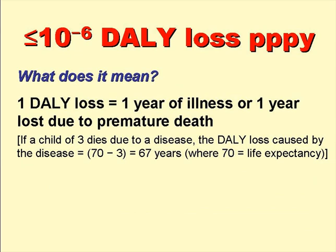What does a 10 to the minus 6 DALY loss per person per year actually mean? A 1 DALY loss equals 1 year of major illness, or 1 year loss due to premature death. For example, if a child of 3 dies from some disease, then the DALY loss caused by that disease is 70 minus 3, or 67 years, where 70 is the child's life expectancy.